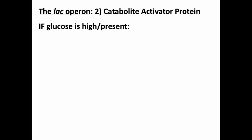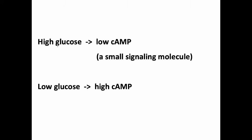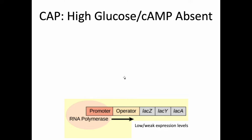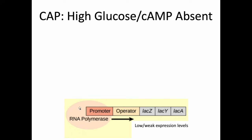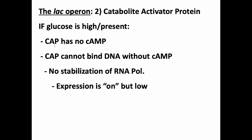What about if glucose is around? High levels of glucose mean low levels of cyclic AMP. Low levels of cyclic AMP means CAP does not have its partner, so it's not going to bind near the promoter or bind to RNA polymerase. Without that, there's just no activation happening. This is a weak promoter, so without any activation, you're going to get low or weak expression levels. In summary: if glucose is high or present, cAMP levels are low; CAP cannot bind to DNA without its cyclic AMP partner; there's no stabilization of RNA polymerase; expression is on but low.